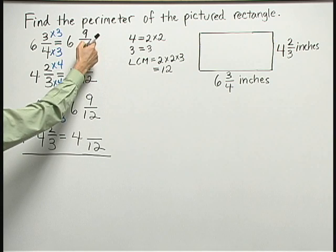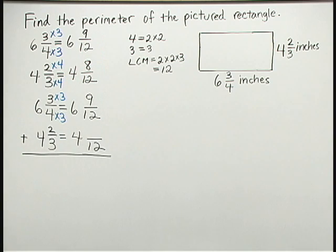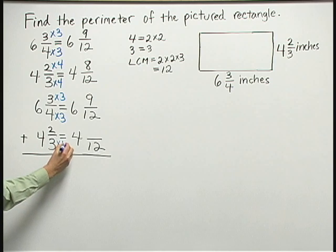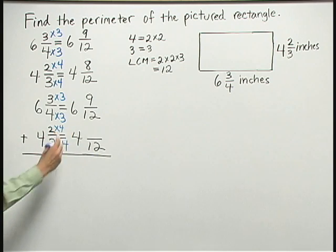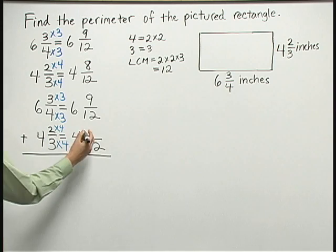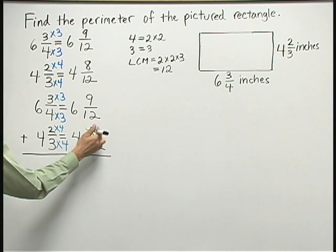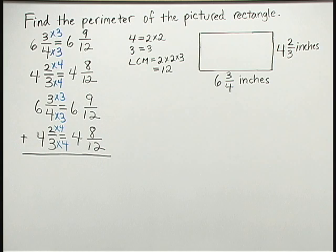And then my last, down below, three times four is twelve. Two times four then is eight. And that's exactly the same as my second one. Now I'm ready to add up all four of these numbers.